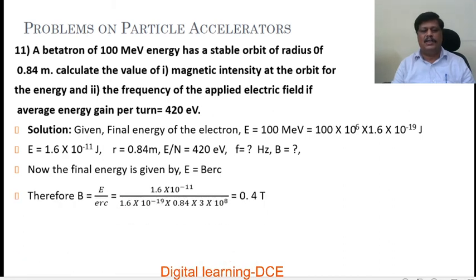The final energy is given by E equals B e r c. Equating for B: B equals E by e r c. Substituting energy in Joules as 1.6 into 10 power minus 11, charge on the electron, radius 0.84 m, and velocity of light, after simplification we get B equals 0.4 tesla.